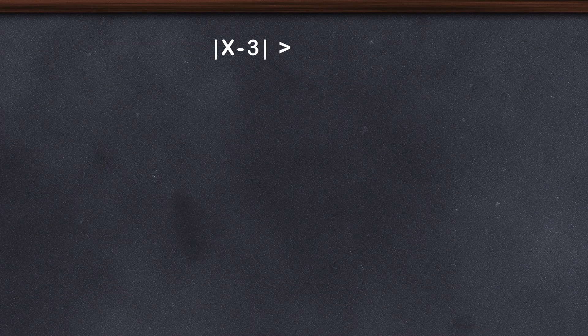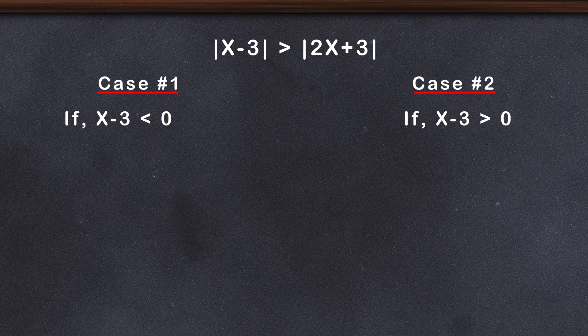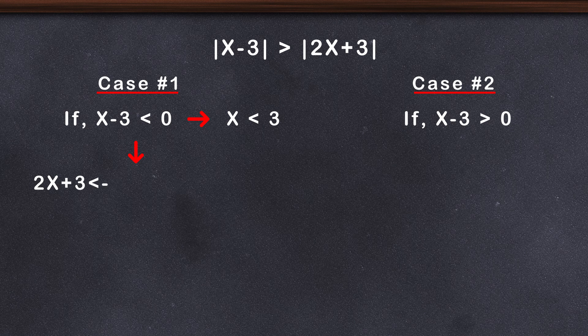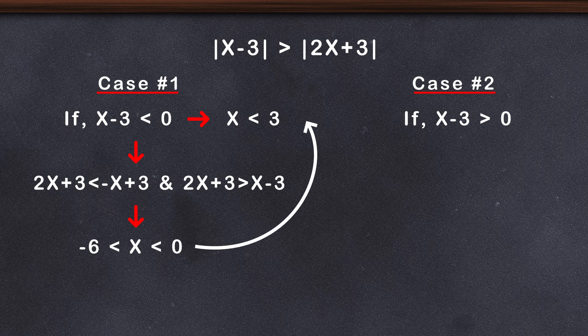So let's take the original example: |x - 3| > |2x + 3|. Let's take two cases. Number one: x - 3 < 0, and number two: x - 3 > 0. Solving case number one. Here, x < 3, and we have 2x + 3 < -x + 3, and 2x + 3 > x - 3. We get the interval -6 < x < 0, and it satisfies the initial condition of x < 3.